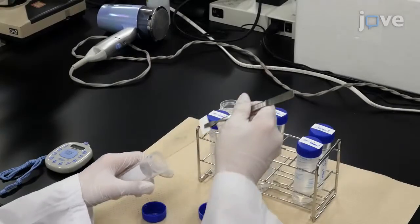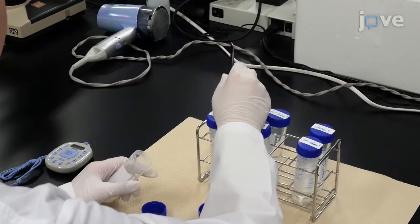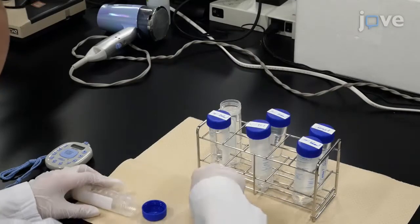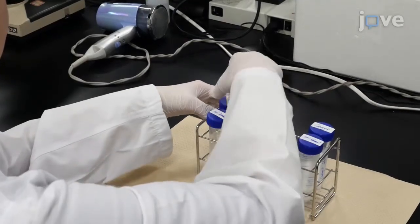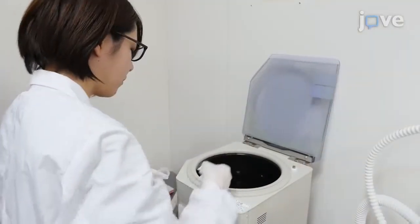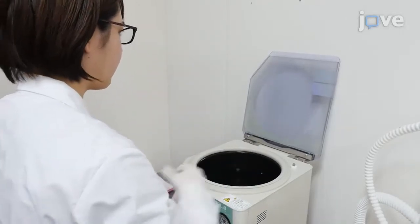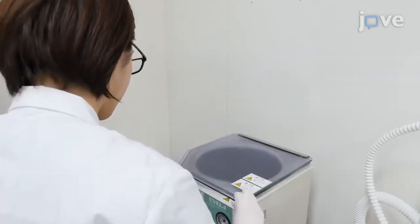To rinse the tissue sections, immerse the samples in 40 to 100 milliliters of 70% ethanol in a glass staining jar for 30 seconds. To remove endogenous lipids and inorganic salts, wash the samples using the washing sequence listed in the text protocol. Then dry the samples in a vacuum for 30 minutes.